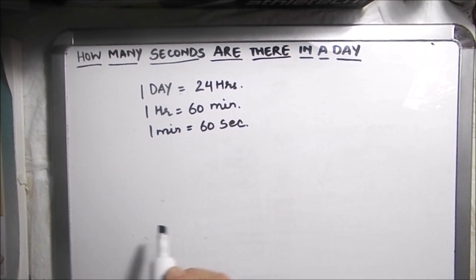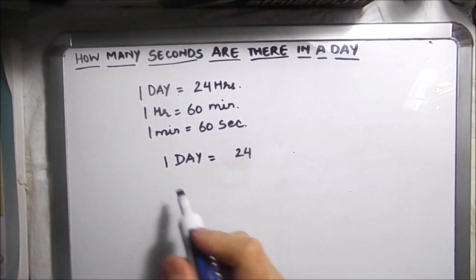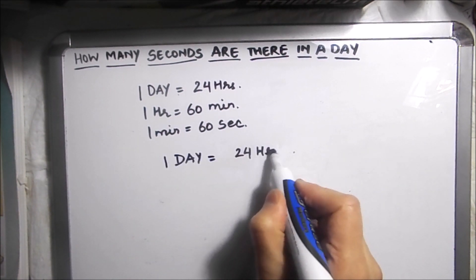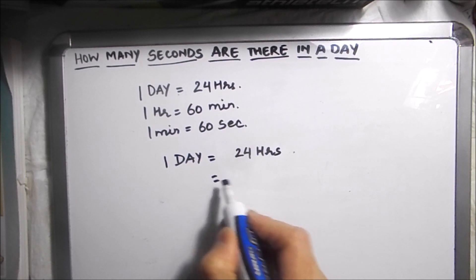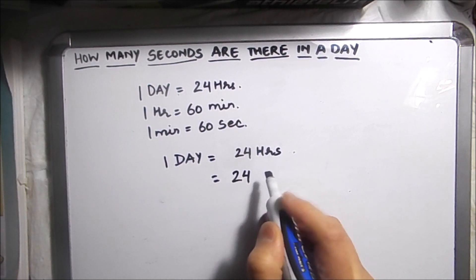We know that one day is 24 hours or 24 times one hour.